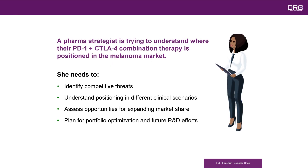So in the first example, a pharma strategist is trying to understand where their PD-1 and CTLA-4 combination therapy is positioned in the melanoma market. She needs to identify competitive threats, understand positioning in different clinical scenarios, assess opportunities for expanding market share, and ultimately plan for portfolio optimisation and future R&D efforts.